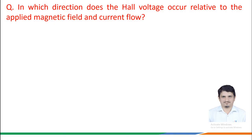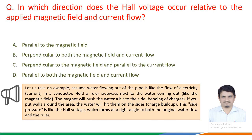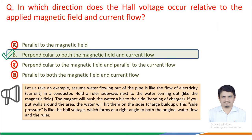In which direction does the Hall voltage occur relative to the applied magnetic field and the current flow? Consider water flowing from a pipe as analogous to electrical current in a conductor. A ruler held sideways next to the water represents the magnetic field, which pushes charges to the side, causing a charge buildup — like Hall voltage — at right angles to both the current flow and the magnetic field. The correct answer is Option B: perpendicular to both the magnetic field and the current flow.